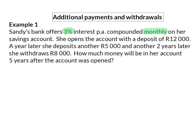She opens the account with a deposit of 12,000 rand. A year later, she deposits another 5,000 rand, and another two years later, she withdraws 8,000 rand. How much money will be in her account 5 years after the account was opened?